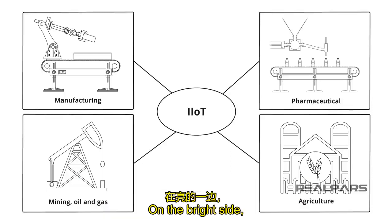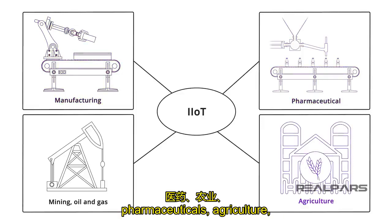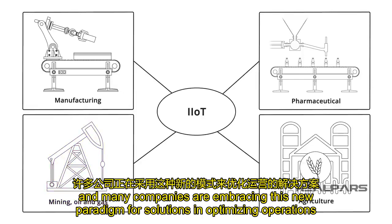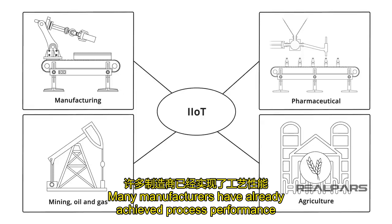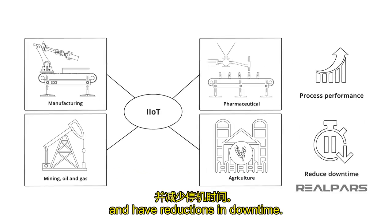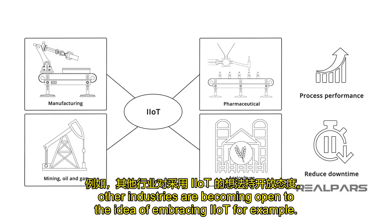On the bright side, the benefits of IIoT in manufacturing, pharmaceuticals, agriculture, mining, oil and gas, and retail are gaining ground. Many companies are embracing this new paradigm for solutions in optimizing operations and personnel productivity. Many manufacturers have already achieved process performance improvements and reductions in downtime. And while manufacturing is certainly leading the way with IIoT adoption, other industries are becoming open to the idea of embracing IIoT.